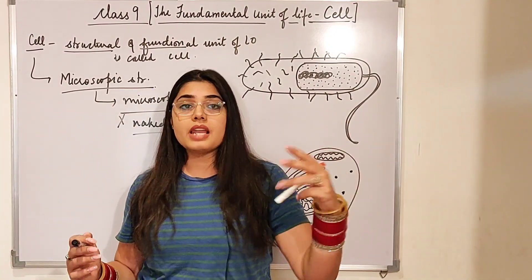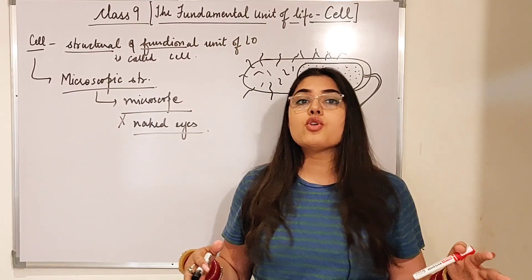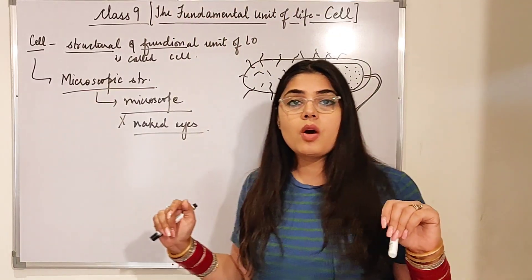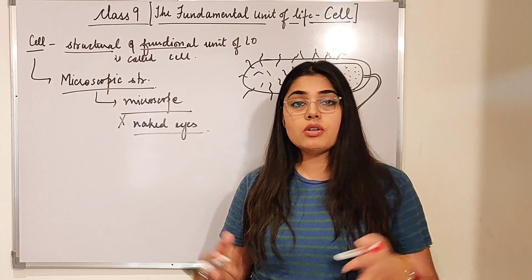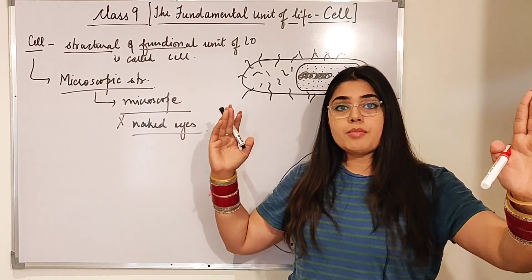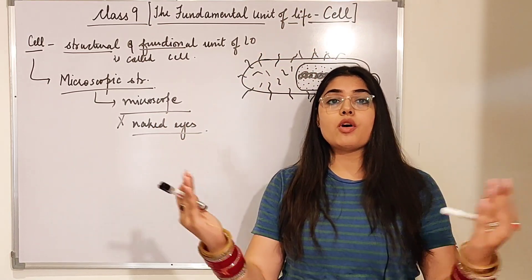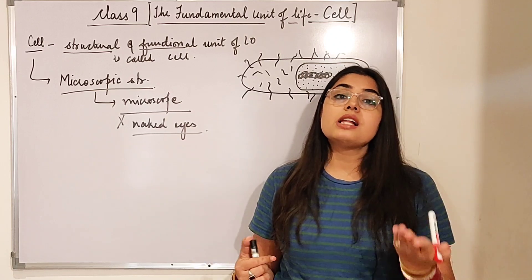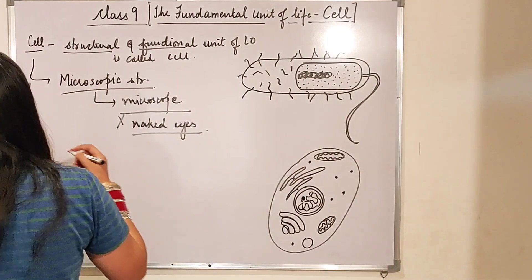Just like a house is made up of bricks, our body — plants and animals — all need cells for the formation of their body. For example, there is a wall behind this board. A person builds the wall using bricks, putting cement between them and piling them together to form a wall, and multiple walls form a room or a house. In a similar manner, our body also needs cells for its structure and its functions.